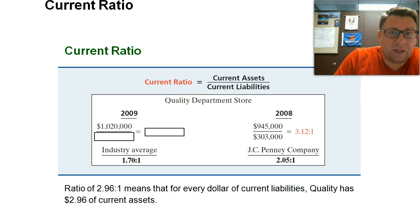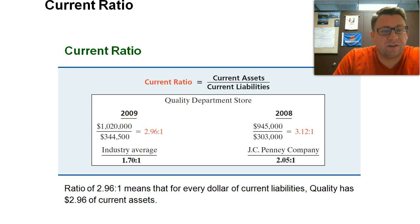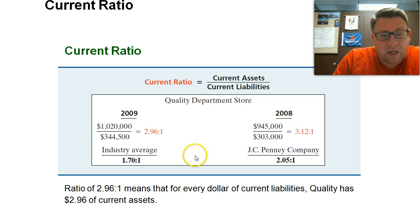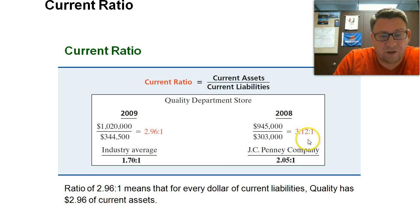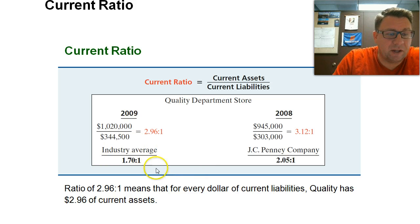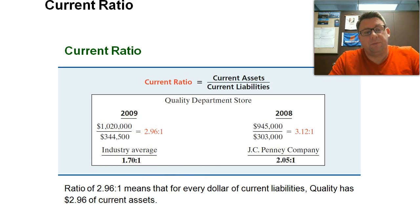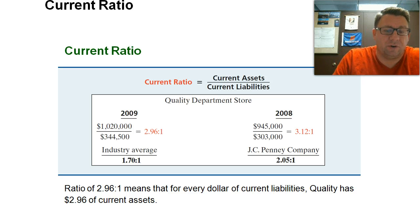Our 1,020,000 divided by 344,500 gives us 2.96 — that's a very strong result. These are the things we would compare it to: How were we the year before? We're not as good this year as we were last year. How do we compare to our competitor? We're stronger than our competitor. How do we compare to the industry? We're quite a bit stronger than the industry.